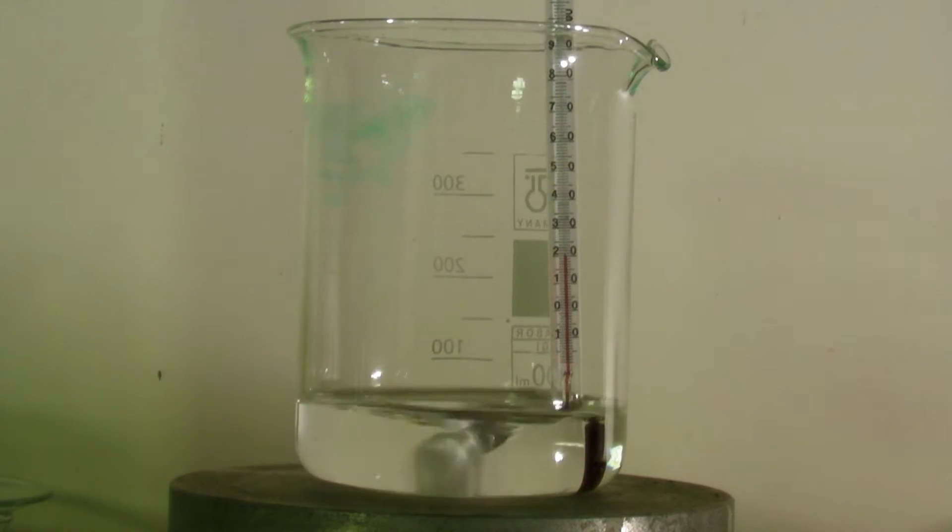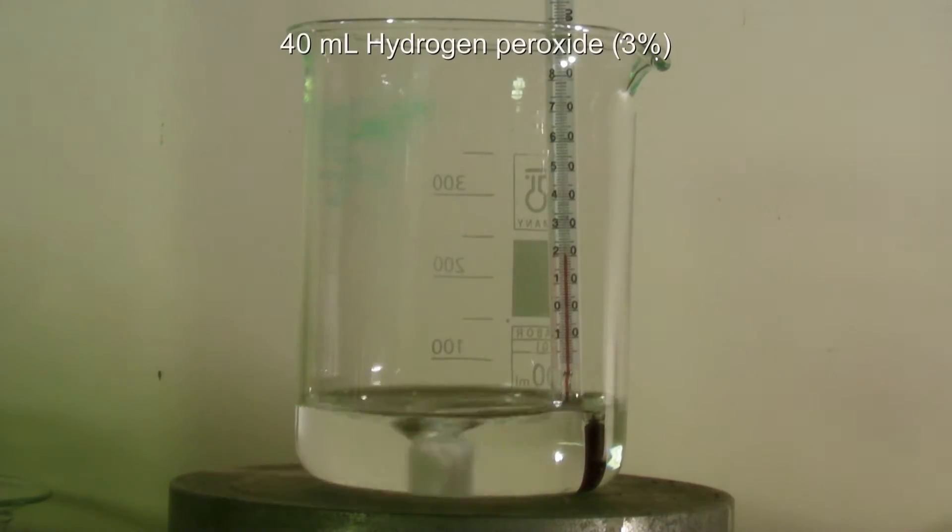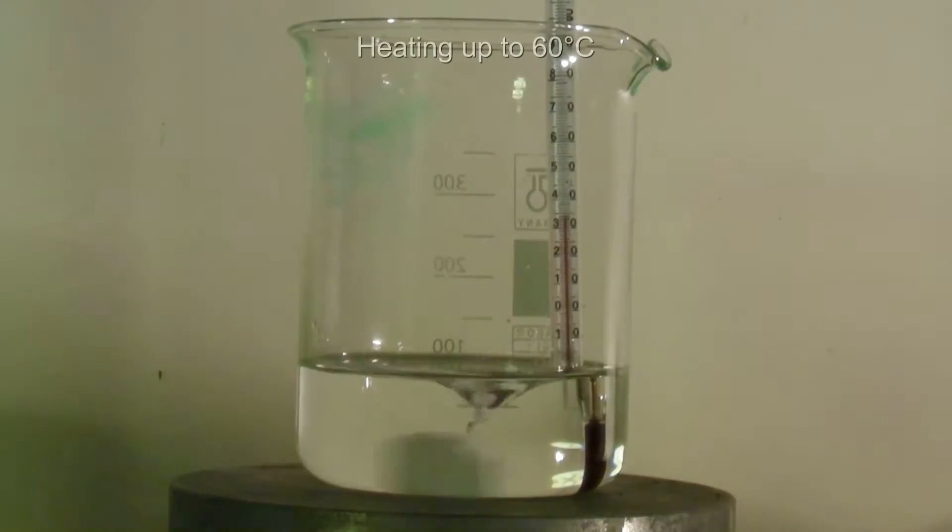To a 400 milliliter beaker, 60 milliliters of a 1 molar solution of potassium-sodium tartrate in water are added. Next, 40 milliliters of 3% hydrogen peroxide are added and the solution is heated up to 60 degrees C.